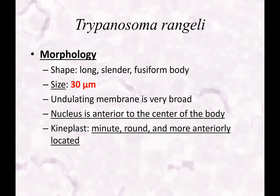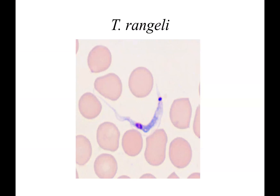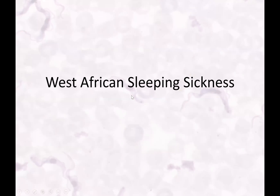With the kinetoplast coming anteriorly with the flagellum, you can see it's more anteriorly placed — not totally posterior as with T. cruzi. Here is our nucleus. West African sleeping sickness — trypanosoma brucei gambiense, found on the west coast of Africa.